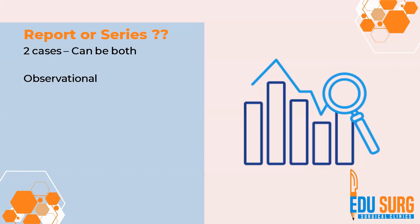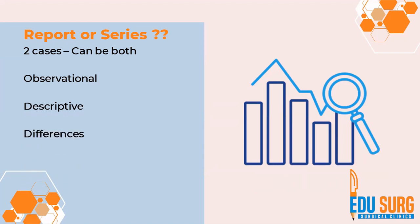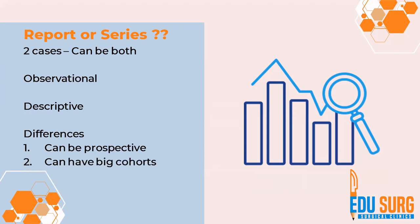Understand that a case series is also observational research and it is descriptive in nature. These are similarities between a case report and a case series — both are observational and both are descriptive. However, a case series can also be prospective and can have big cohorts. A case report will not have more than 1 or 2 patients, whereas a case series can have 100 or 150 patients.